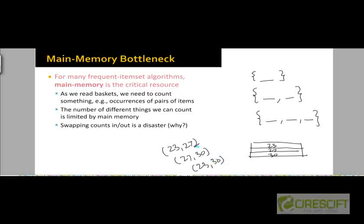When we generate the pair 23-27, we want to update the count by adding one. If that count is saved on disk because not all counts can be maintained in main memory, we will have to fetch that particular disk block into main memory, update it by adding one to the count of this pair, and then save that block back to disk.